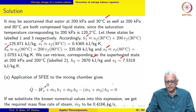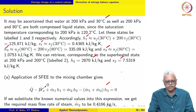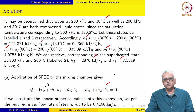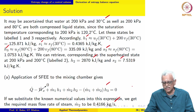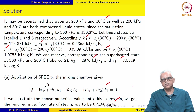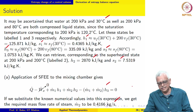We apply the steady flow energy equation to the mixing chamber because it is operating in steady state. Ẇₓ is zero — no external work interaction. Substituting the numerical values, we get ṁ₂ to be 0.4166 kg per second, which is the mass flow rate of steam required to ensure the water leaves at 80 degree Celsius.